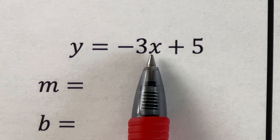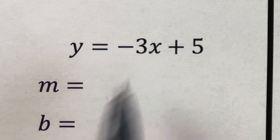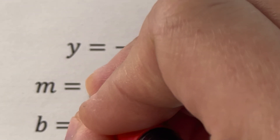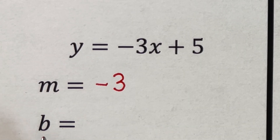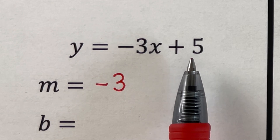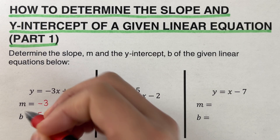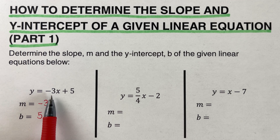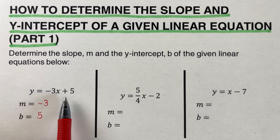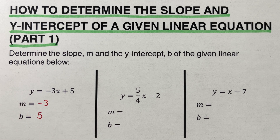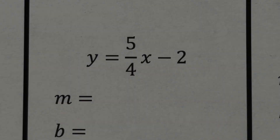In this case, we have a negative 3 in front of the x, so our slope m is negative 3. The b is the constant term, which is 5. So in y = -3x + 5, our m is negative 3 and our b is 5 — matching the form y = mx + b.